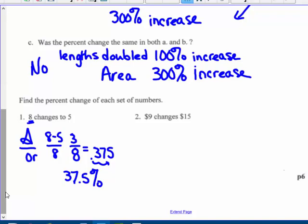Nine changes to $15. So 15 minus nine over the nine. Well, that's six ninths, which you all know is two thirds. And we know six ninths and two thirds is 66 and two thirds percent increase.